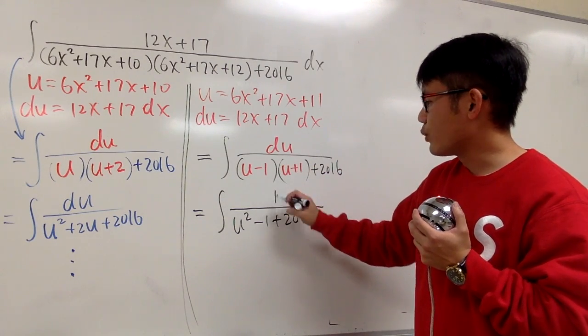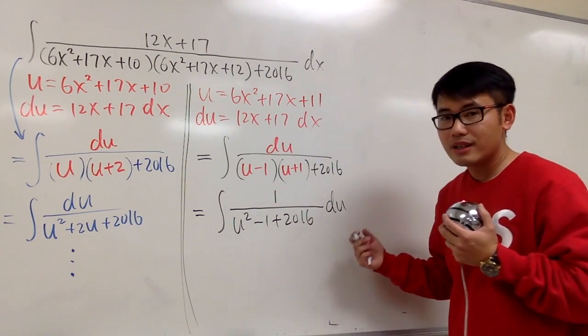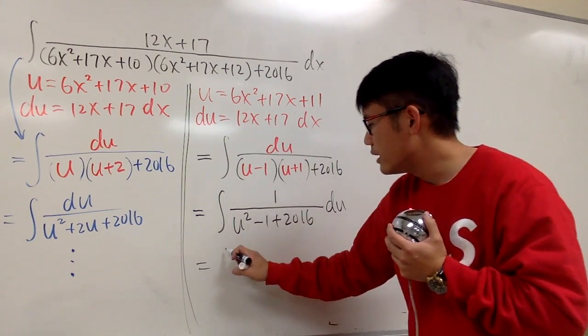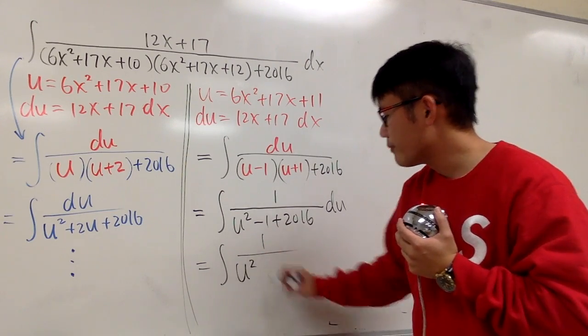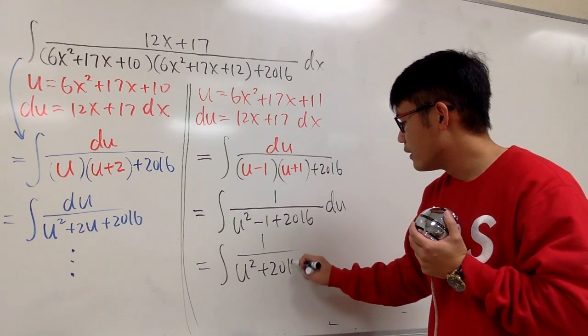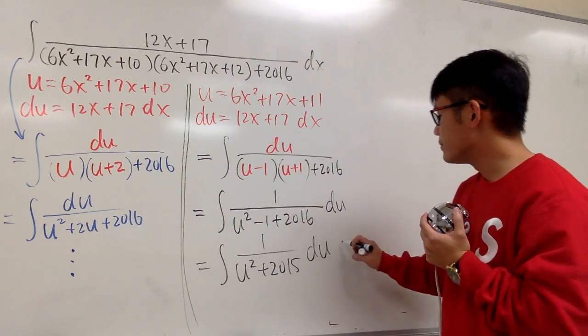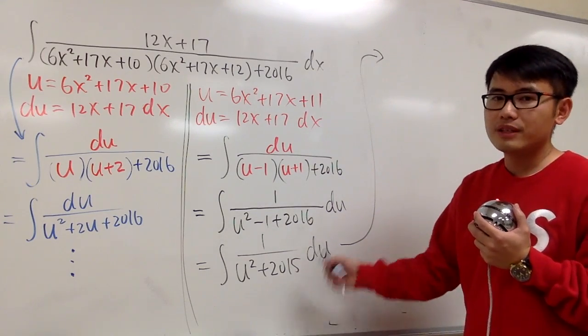And I like to put the 1 on top, and then the du on the side. So let me do this right here for you guys. And you will see, this is the integral. 1 over, we just have u squared now. Minus 1 plus 2016 is, of course, plus 2015, and this is du.